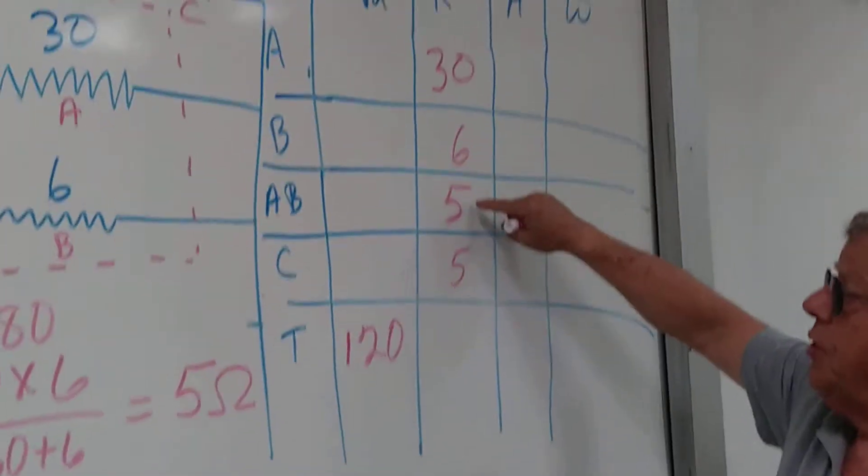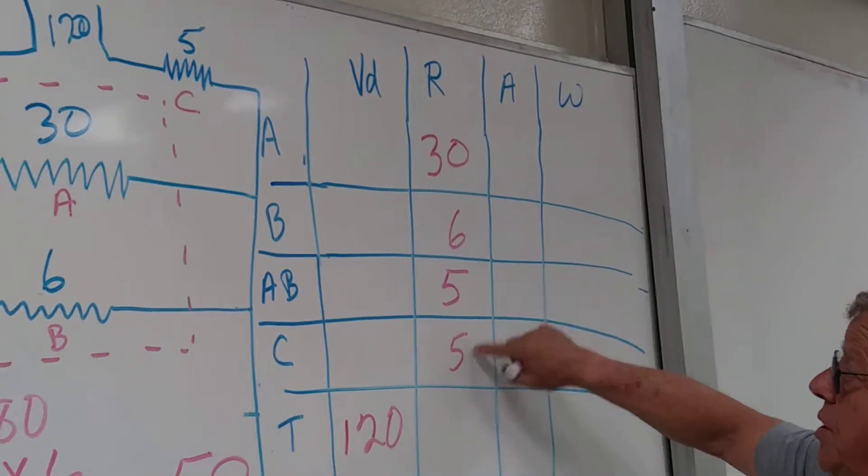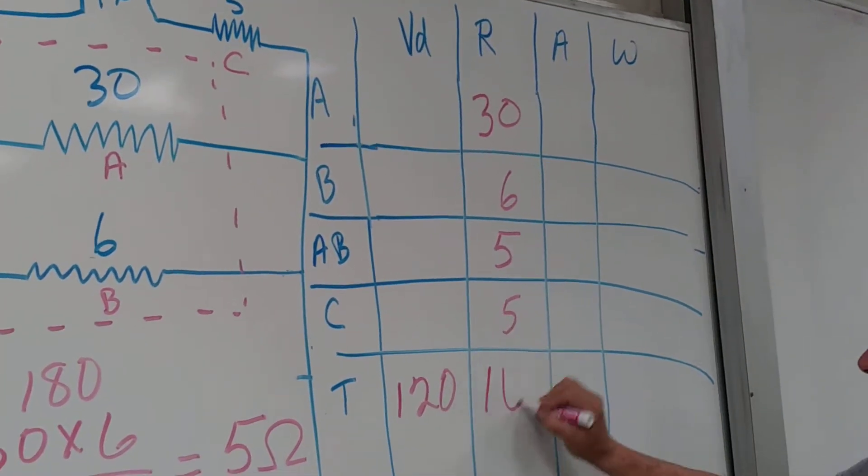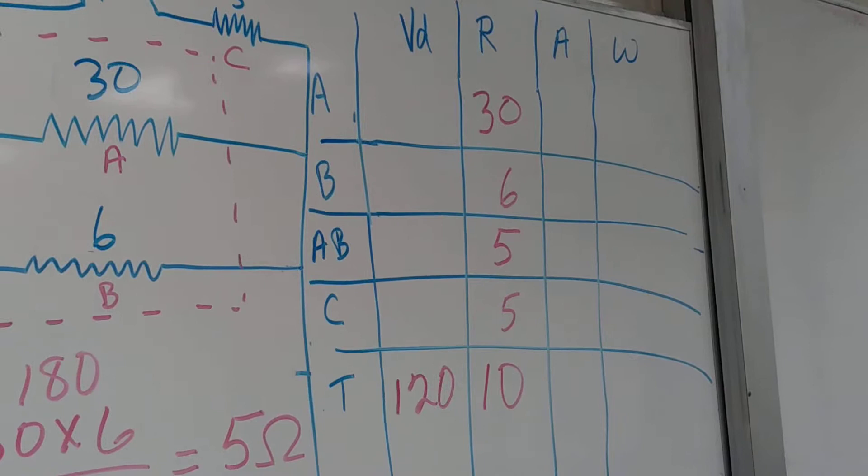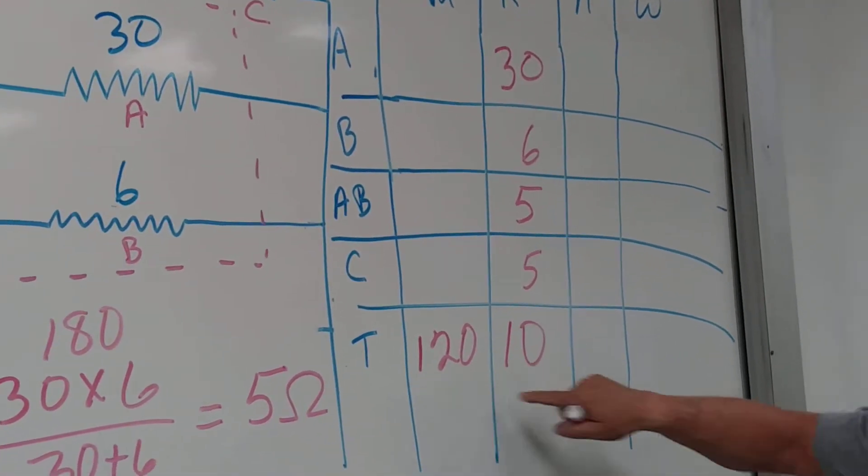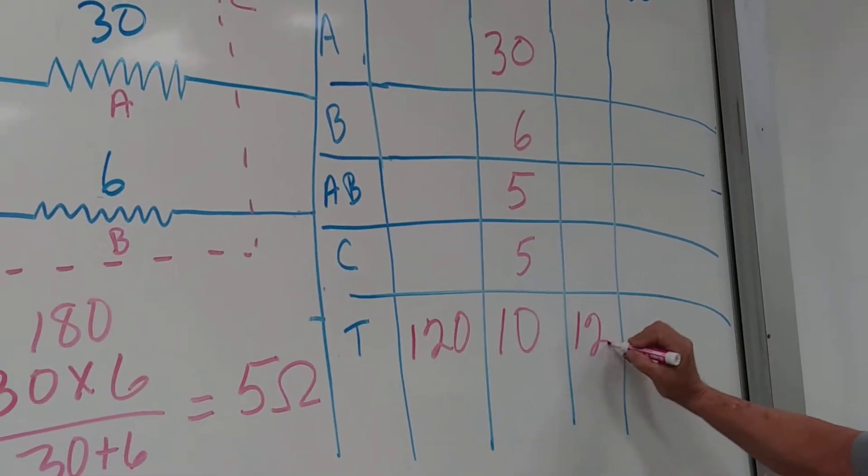That one resistor is in series with this one, so in series what do I do to them? Add them up. It's going to equal 12, right?